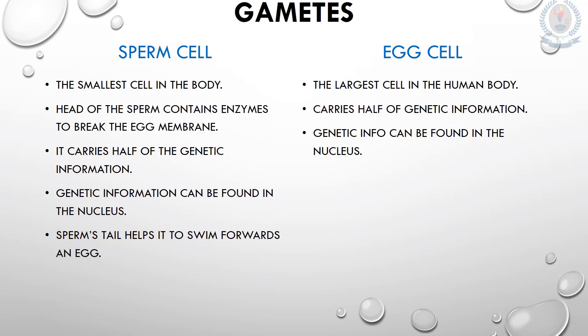The sperm cell contains half of the genetic information needed to form an offspring. All of the genetic information of the sperm cell can be found in the nucleus, which means the information can be transferred efficiently from the sperm to the egg during fusion. A sperm's tail helps it to swim fast towards an egg.